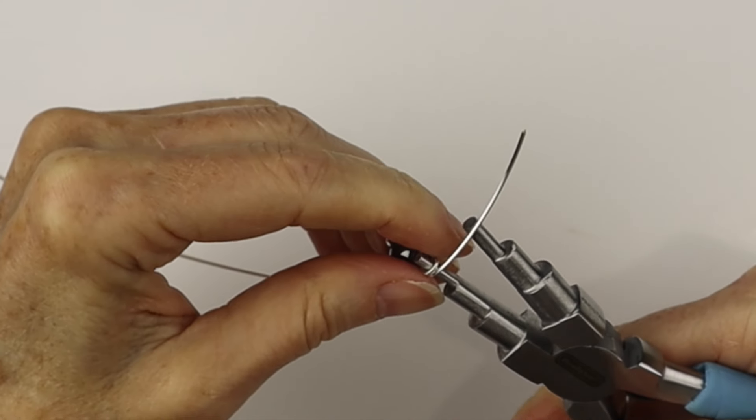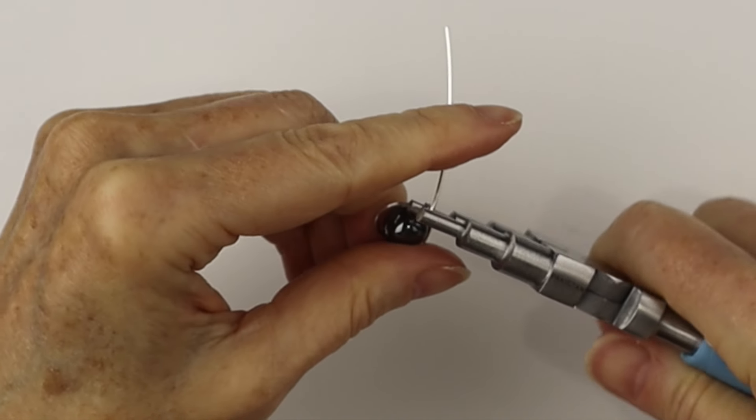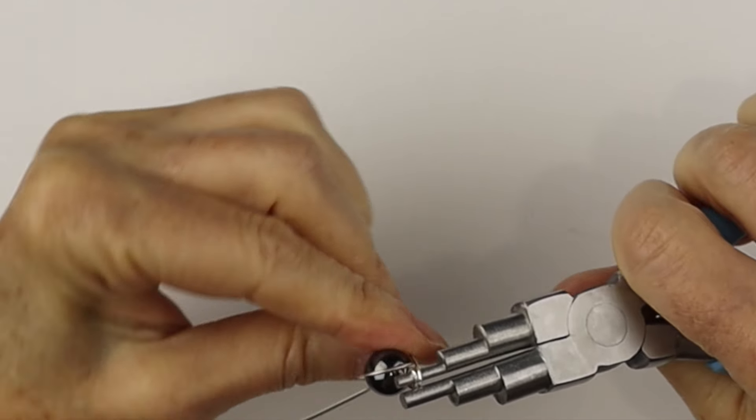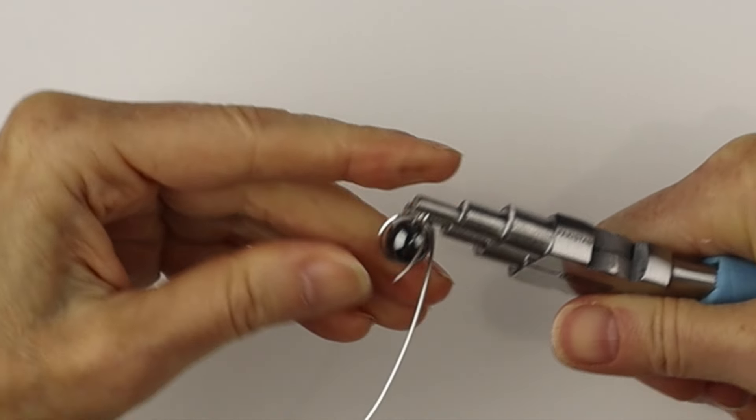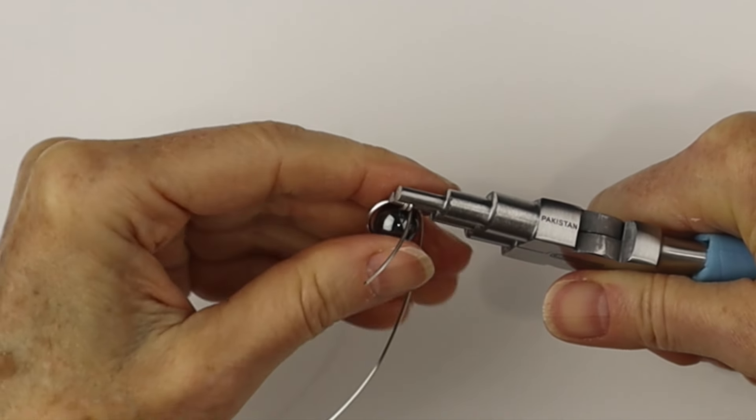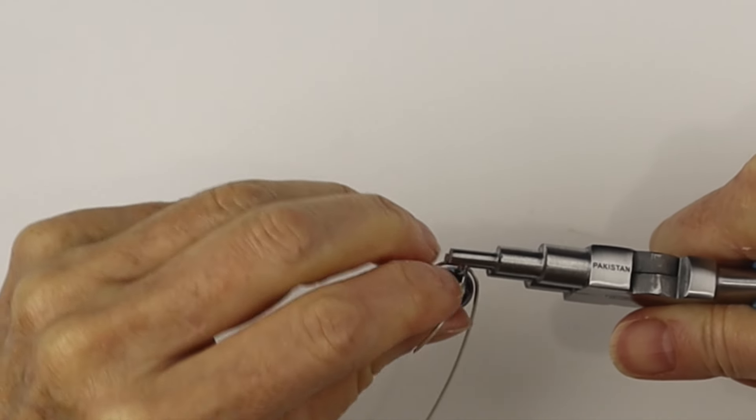Bring it right around and the bail making pliers are perfect for this so the two loops will be the same size. We're going to bring the wire around sticking straight out at the front, adjust the loop a little bit so it's nice and even.